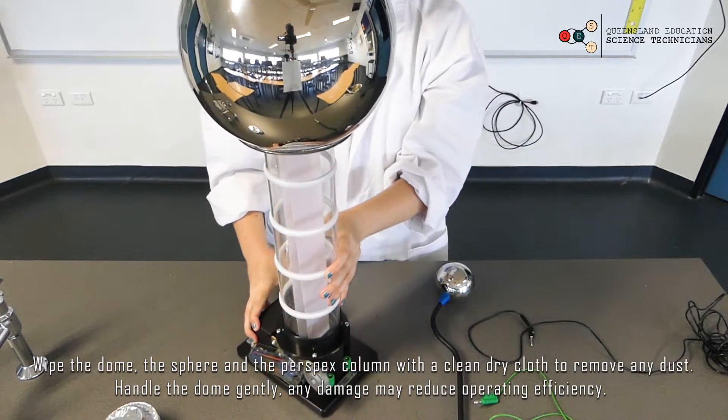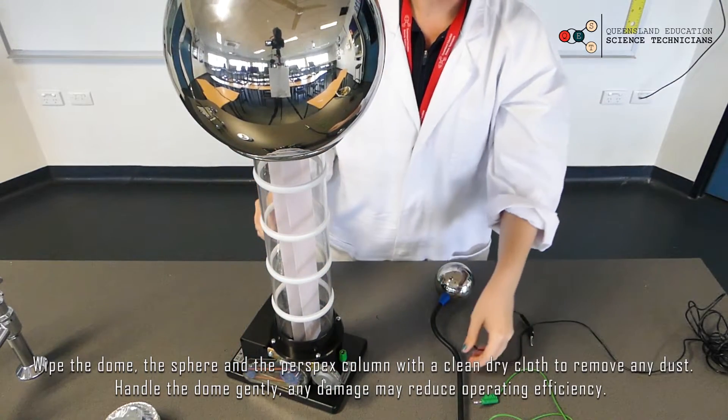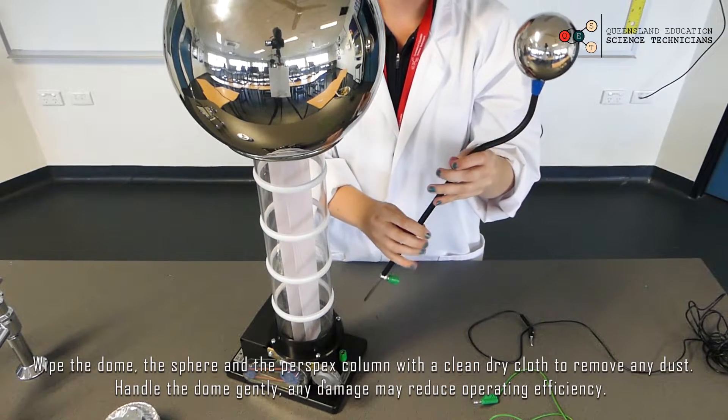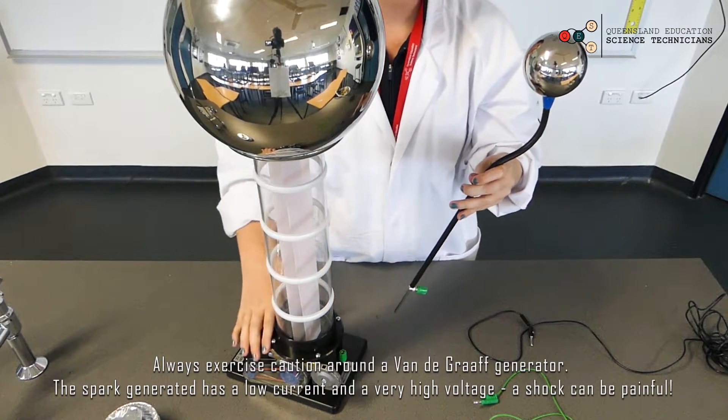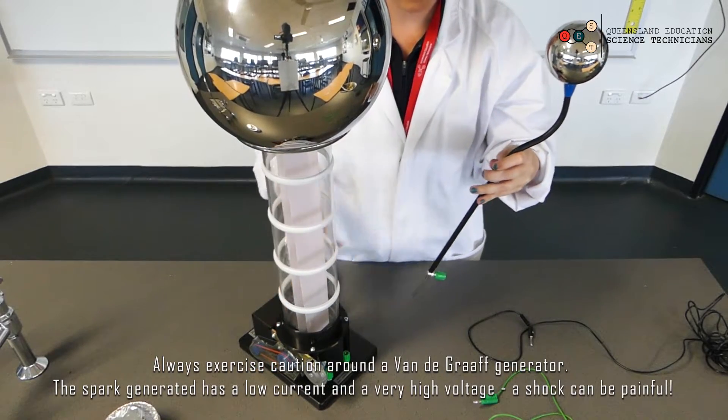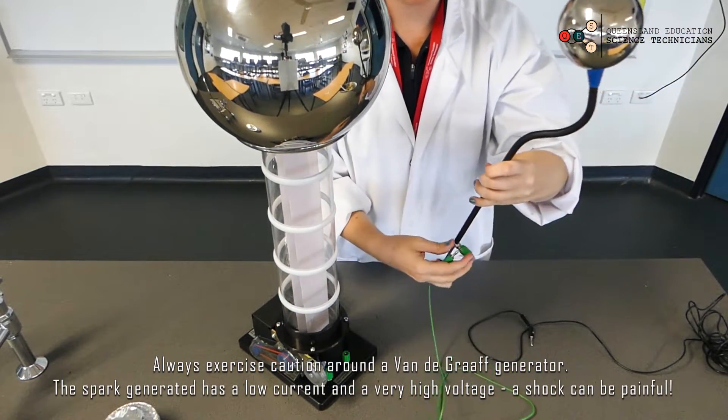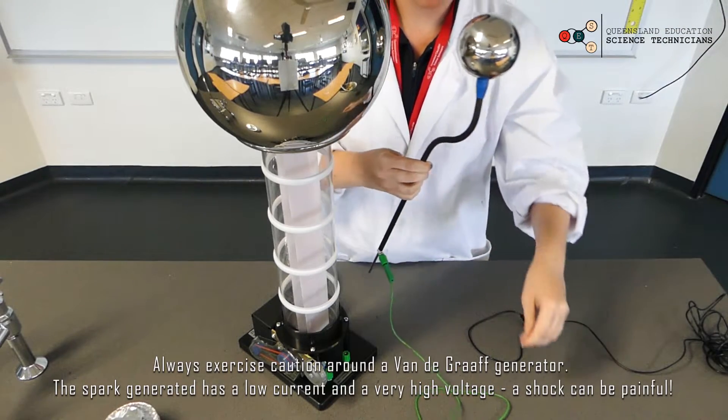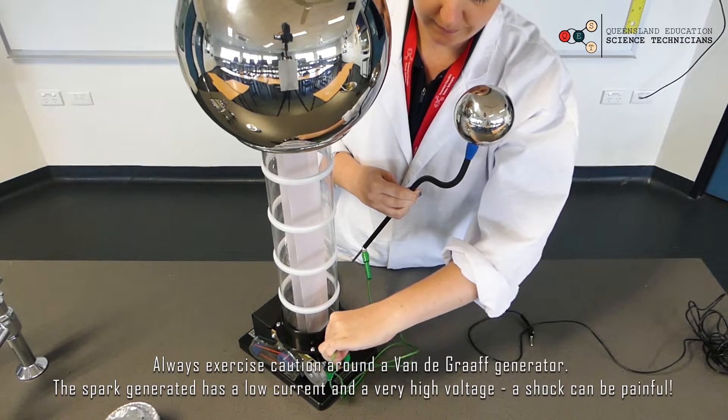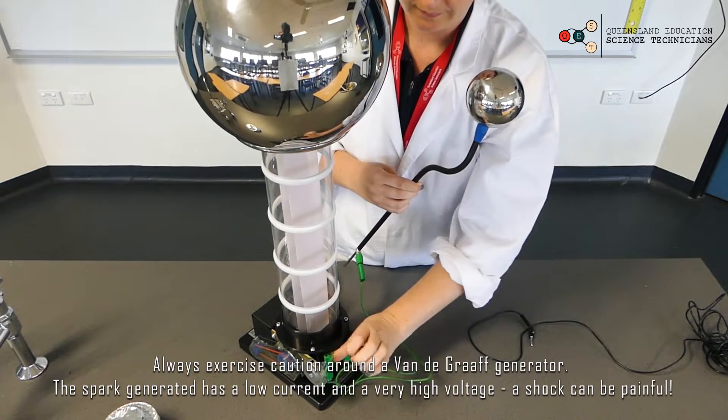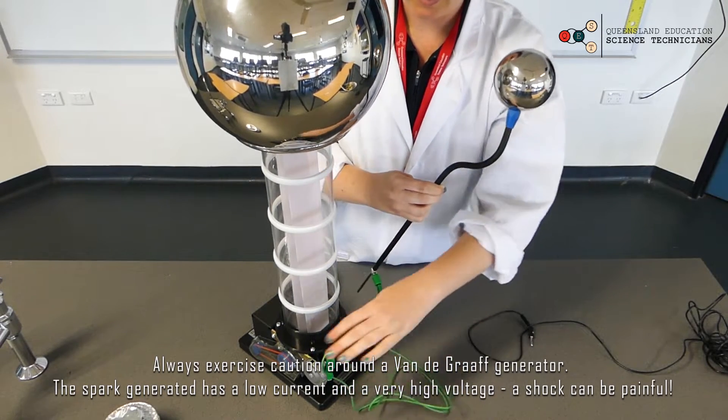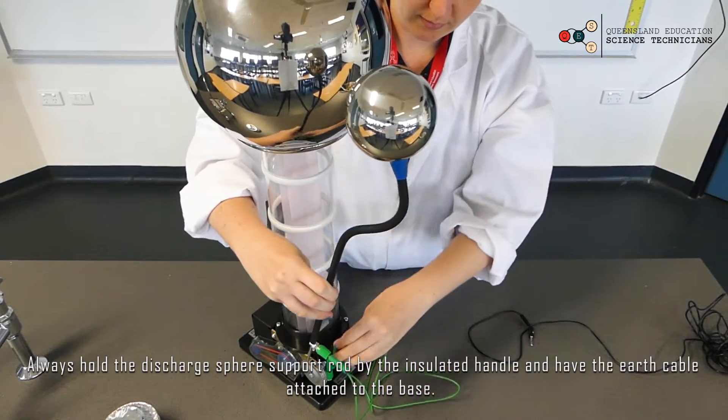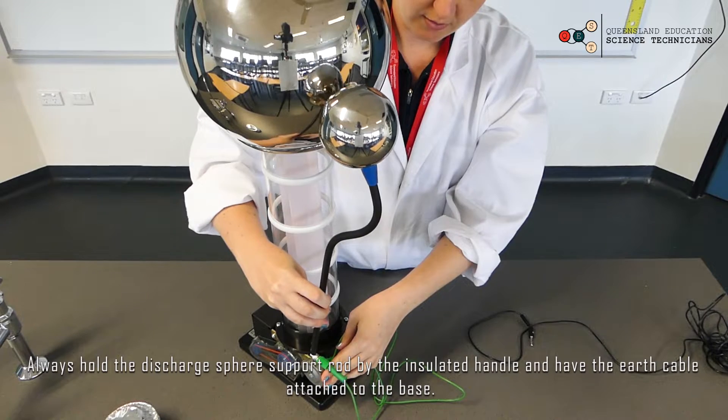The next step is to attach the discharge sphere to the base of your Van de Graaff. Just take your green lead, put one end into the handle of the discharge sphere and the other end into the terminal at the base. You can see there is this little gear-like thing at the bottom, that's a stand for this, slot it in.